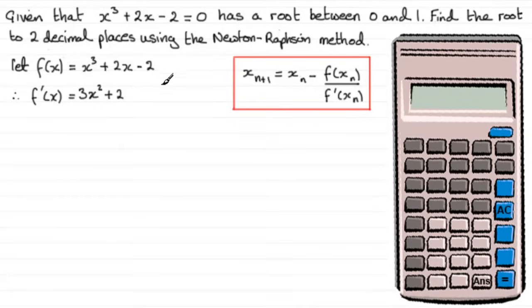Now we know there's a root between 0 and 1, and we've tested that in the past because if we put 0 in we get -2, and if we put 1 in we get 1, so there's been a change in sign over this interval. So if we take as our first approximation, let x₁ equal 1.